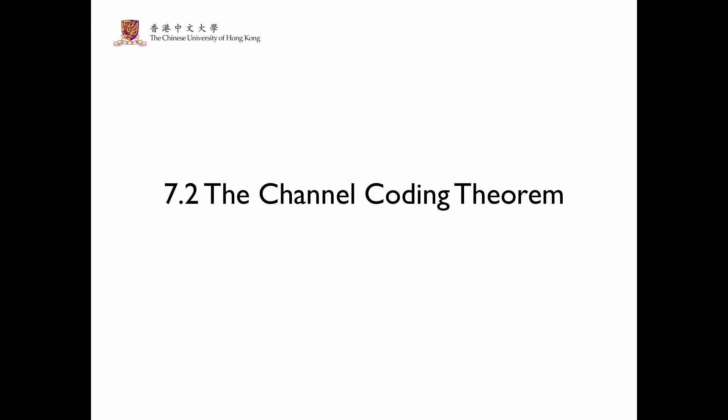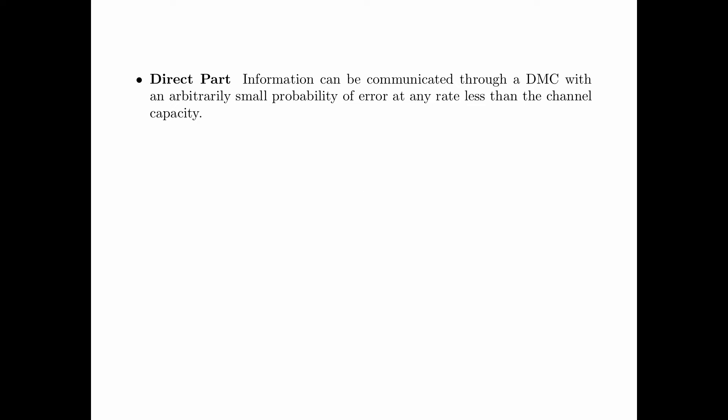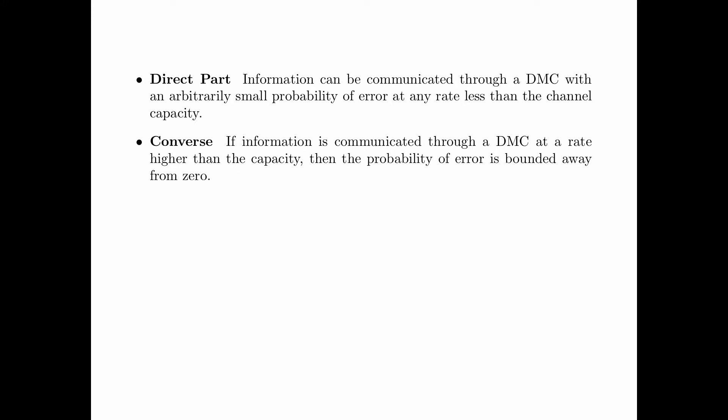In section 7.2, we formulate the channel coding theorem. The channel coding theorem consists of two parts. The direct part says that information can be communicated through a DMC with an arbitrarily small probability of error at any rate less than the channel capacity. The converse says that if information is communicated through a DMC at a rate higher than the capacity, then the probability of error is bounded away from zero.